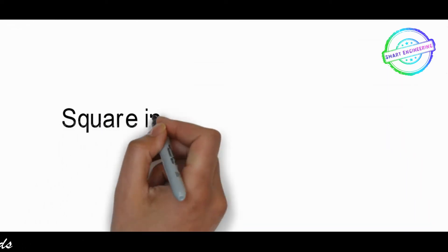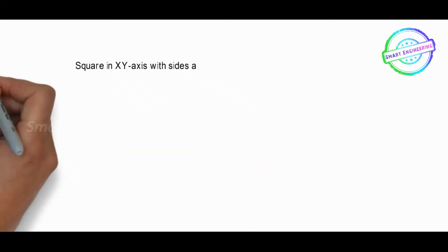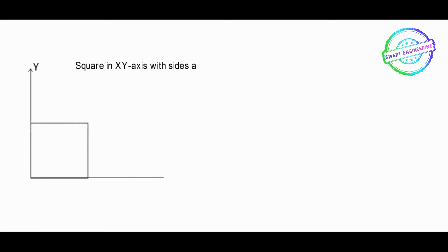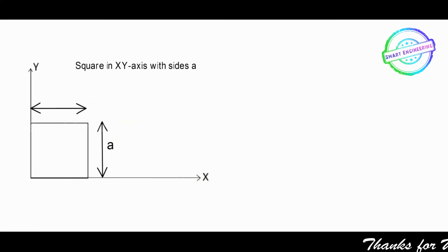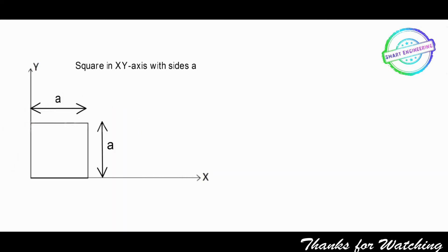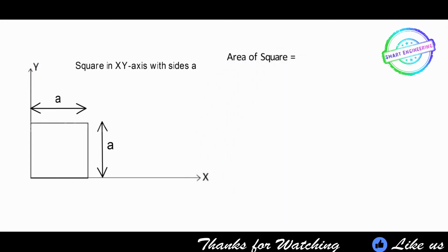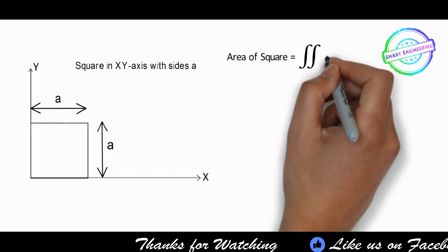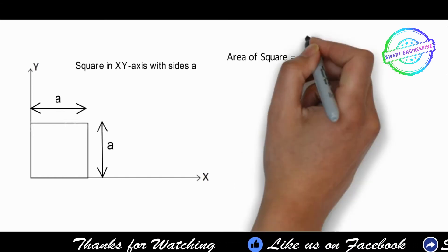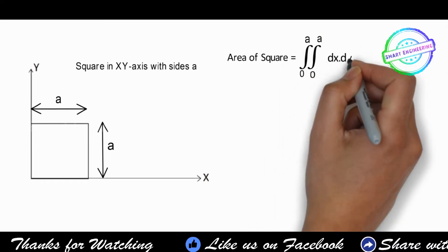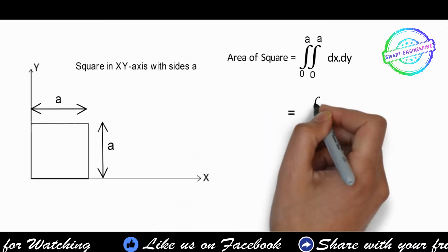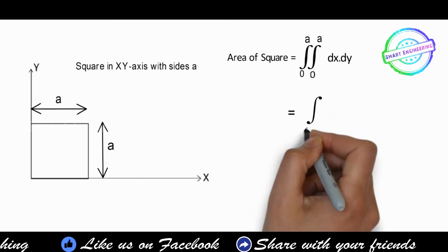Now we will place a square on the x-y axes. With x equal to 0 and y equal to 0 as the starting boundaries, we use the double integral. The element dxdy represents the square and its thickness, varying from 0 to a.